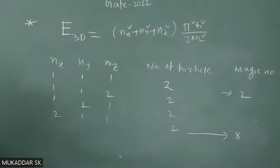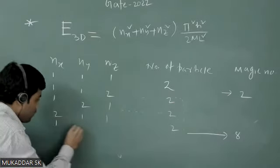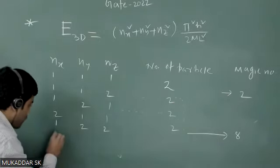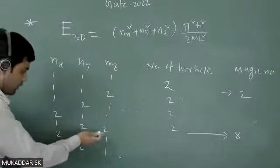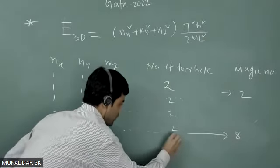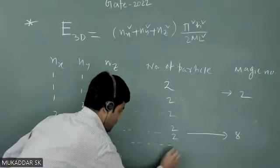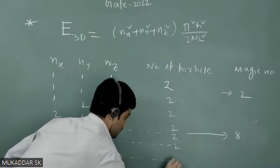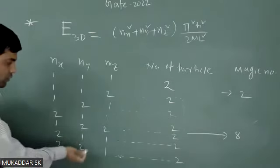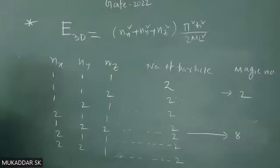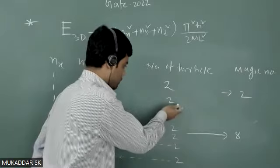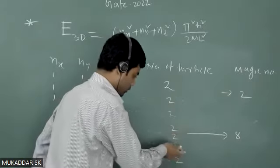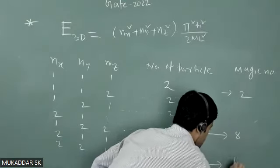The next set of (nx, ny, nz) values are (1, 2, 2), (2, 1, 2), and (2, 2, 1). Again, for each set of (nx, ny, nz), the number of nucleons is 2. So counting the particles: we already had 8, and these three states contribute 2 + 2 + 2 = 6 more, giving us 8 + 6 = 14. So we get another magic number: 14.